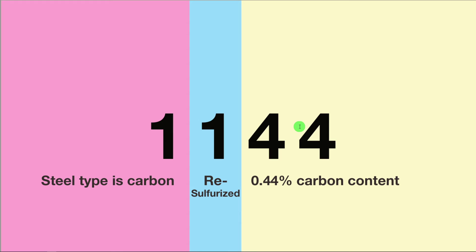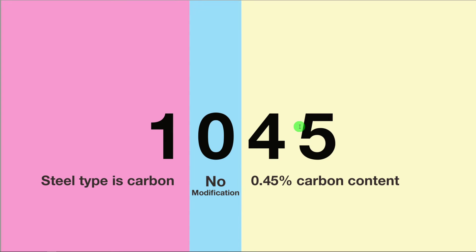Let's look at one last example. This steel type is carbon again. There's no modification because the second digit is a zero, and this has a 0.45% carbon content.